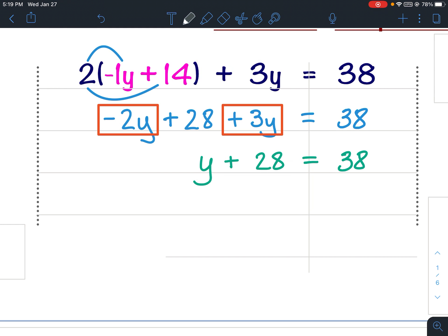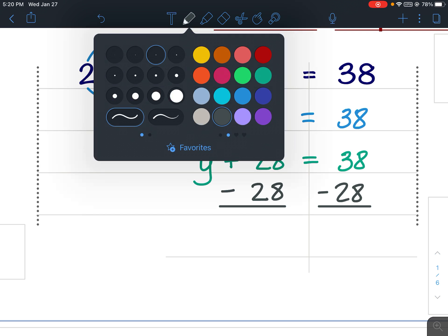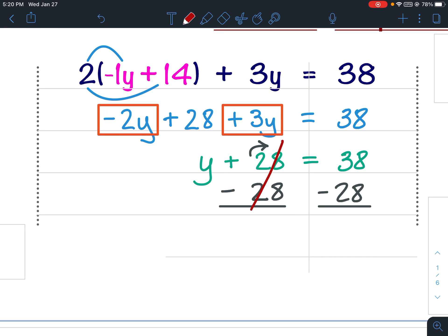And now this is a one-step problem. The y term is on the left side. It's the only variable term. So that means I need to take this constant term to the other side of the equation. Well, let's see if it cooperates with me. There we go. Since it's positive 28, I'm going to subtract 28 from both sides. Cancel the 28, and I've got y equals 10. 38 minus 28 is 10.